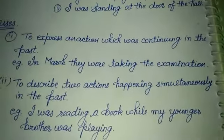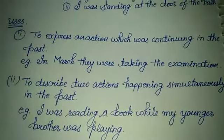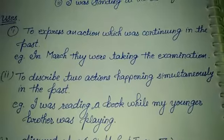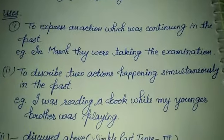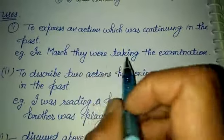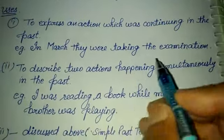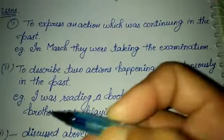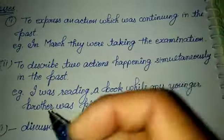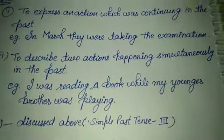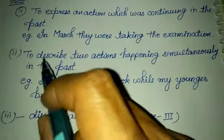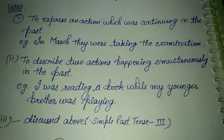For example, this video is running right now — it is continuing in the present. After some time, it will be in the past. So for an action that was continuing in the past, we use past continuous tense — was/were + first form + ing. For example: 'In March, they were taking the examination.' Just like you were giving your exams in March, but due to the Corona pandemic, exams were held a little later. March is now past, so that action was continuing in the past.